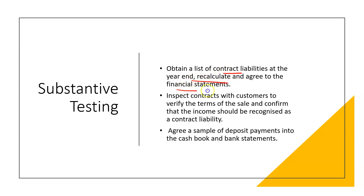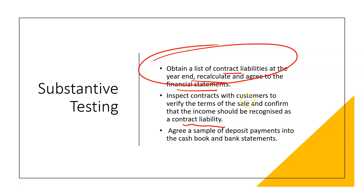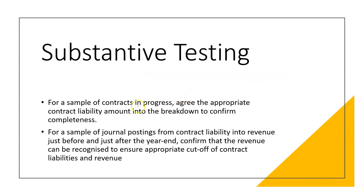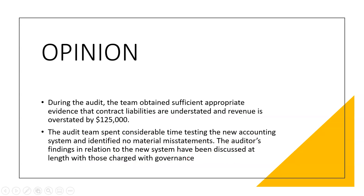Getting a list of all those contract liabilities and ensuring - are we recognizing contract liability at year end as contract liability and not as income? I've got here: agree a sample of deposit payments into the cash book and bank statements. Also, a sample of contracts in progress - agree the appropriate contract liability amount into the breakdown to confirm completeness. That's all we're really doing, ensuring that separation there.